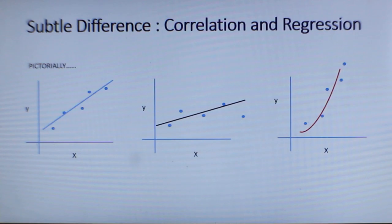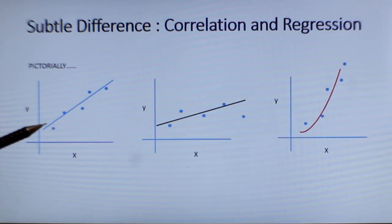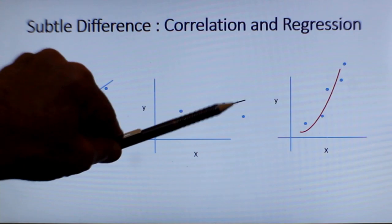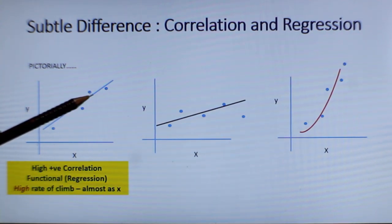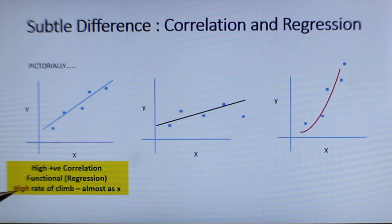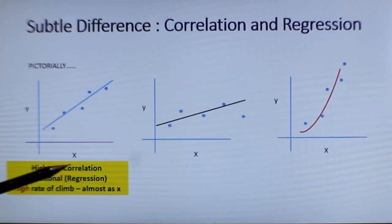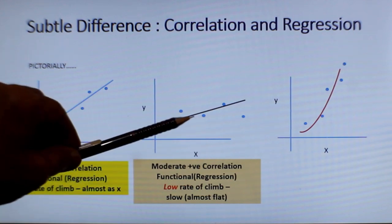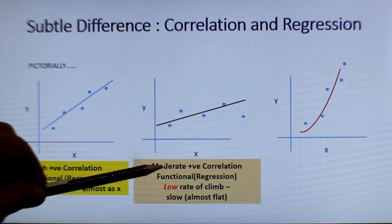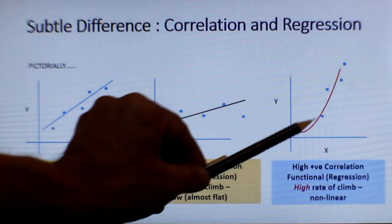Now let us understand this pictorially. You are seeing three graphs — these are all scatter plots with data points and a trend line, something we also saw in correlation. In the first one it is high positive correlation with a high rate of climb — y increases quite fast with x. In the second it is moderate positive correlation because the line is close to the data points but the climb is slower — a low rate of climb. The third is typically a non-linear correlation.